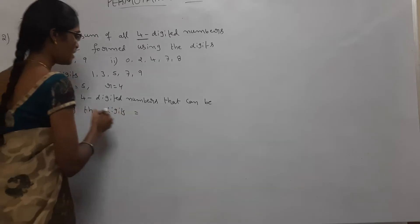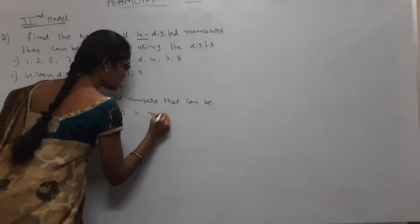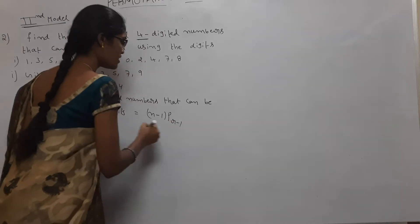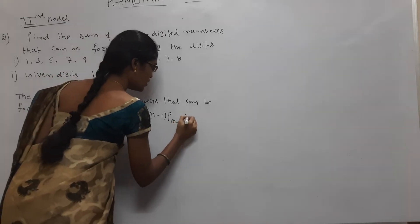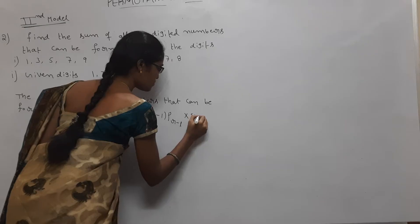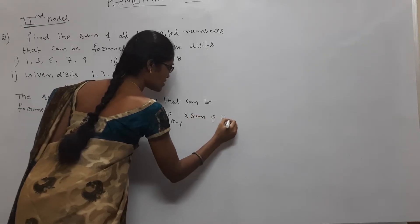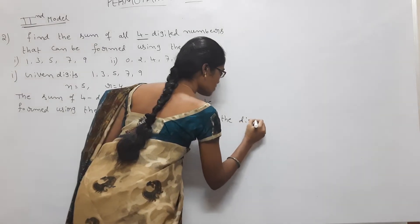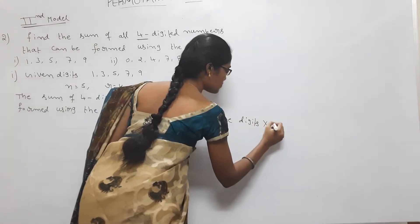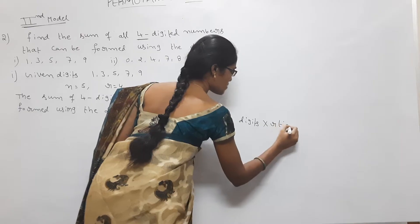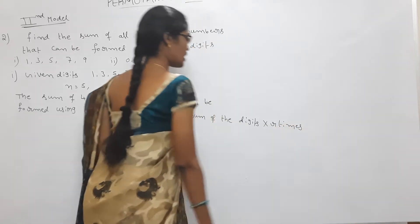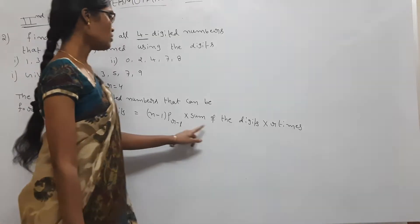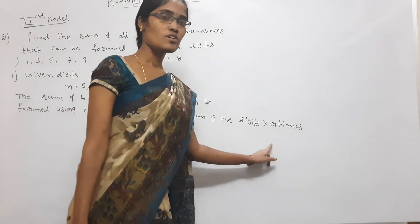The formula is: (n−1)P(r−1) into sum of the digits, into r times (repunit with r ones). So the formula is (n−1)P(r−1) × sum of digits × 1111 (r times).